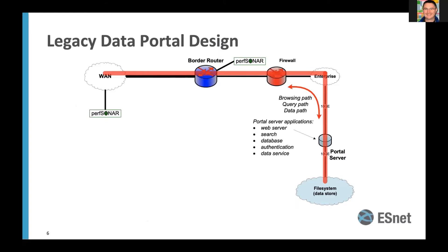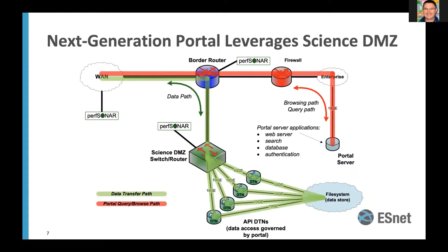Traditionally, data portals have been set up on enterprise networks — a file system with a web server, possibly on a VM or Docker container. We've talked about the network infrastructure for CCSTAR with the ScienceDMZ, but we have legacy portals out there just sharing data. If we could combine the two, you could separate out the existing web portal, database, and authentication behind the enterprise firewall. When a data transfer happens, you initiate an API call out to the data transfer node, exposing DTNs only for data transfers.